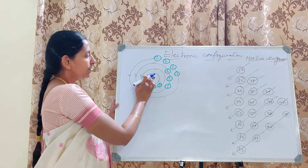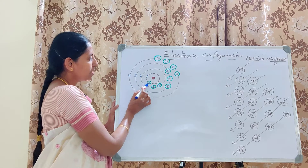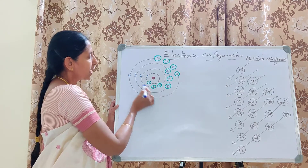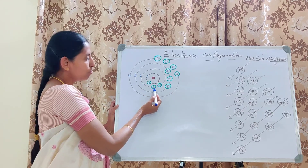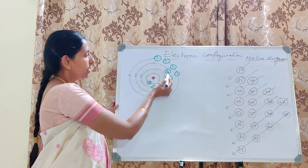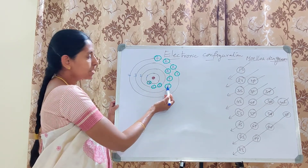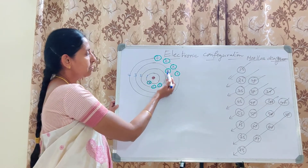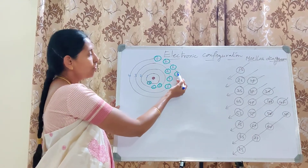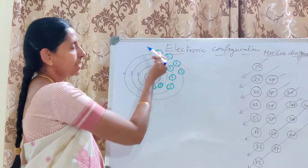We know that in the first orbit only one subshell is there, that is S. In the second orbit, two subshells: S and P. In the third shell, three subshells: S, P, D. In the fourth orbit, four subshells: S, P, D, F.